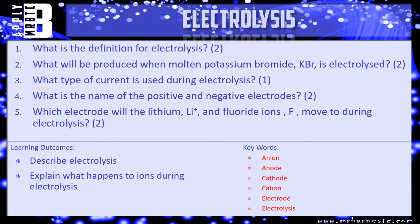Question three: what type of current is used during electrolysis — direct or alternating current? Question four: what is the name of the positive and negative electrodes? Question five: which electrode will lithium, Li⁺ (your positive cation), and fluoride, F⁻ (your negative anion), move to during electrolysis? Pause the video, have a go at the five questions and we'll see how you've done in a minute.